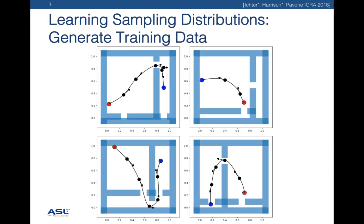We'll walk through a case study with a double integrator system on a narrow passage environment. The algorithm begins by generating training data from successful motion plans, though this data could also be from robot operation, human demonstrations, and other sources.